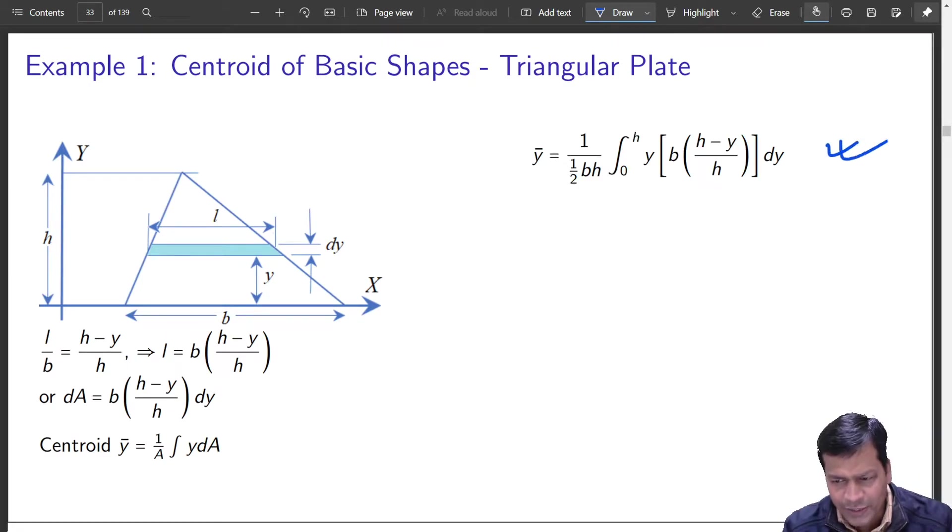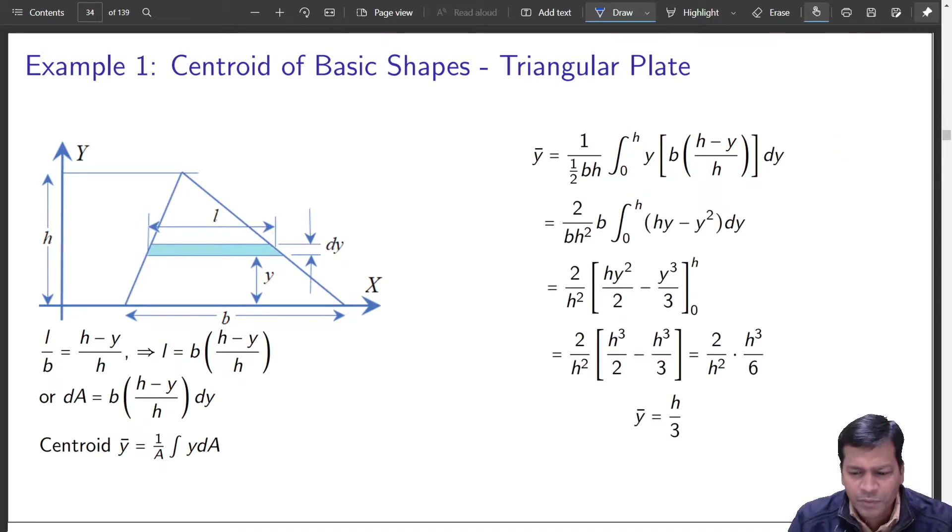So centroid y bar should be equal to 1 by total area of this triangle. Integral of y dA, this is moment of this area, Qx you can call it. So y and dA, dA comes from here, y is y that will remain there. So that is what is centroid. So y bar is equal to this is complete area of this triangle. This gives me y bar is equal to h by 3.